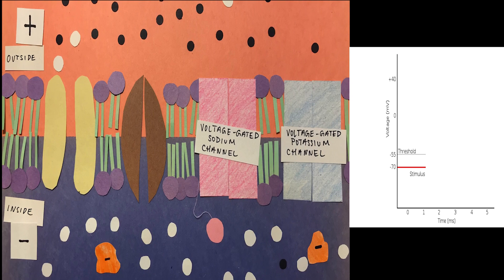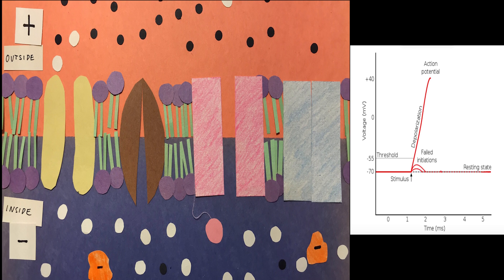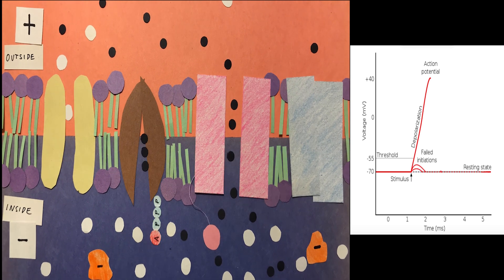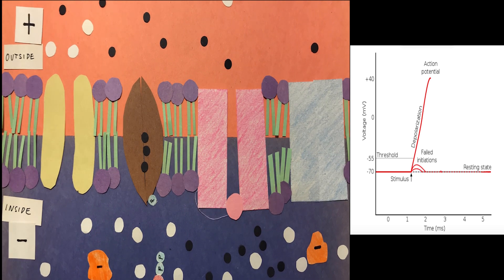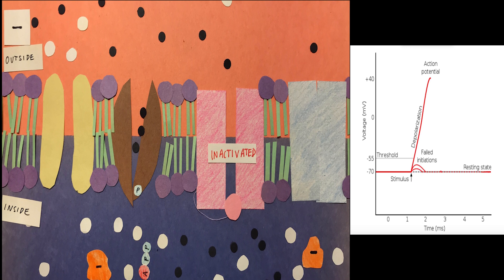Neurons also have voltage-gated sodium and potassium channels. These channels only open with an electrical stimulus. When this stimulus isn't strong enough, meaning it doesn't pass the threshold, it results in graded potentials and remains at the resting state. However, when the stimulus is strong enough, the voltage-gated sodium channels open and sodium ions rush in. The sodium potassium pump and the leaky potassium channel continue working during this process. Once the membrane potential reaches about positive 40 millivolts, the sodium channel becomes inactivated. The rush of sodium makes the outside of the cell negative and the inside positive.